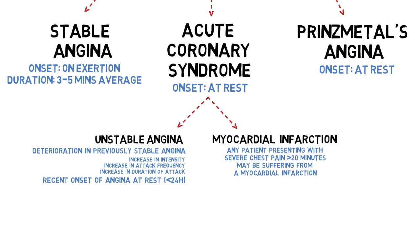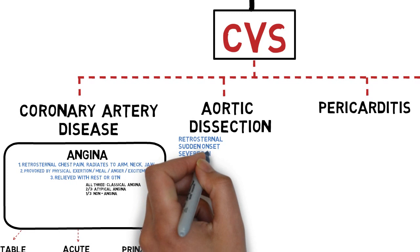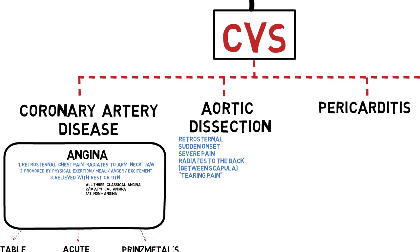In aortic dissection, the pain is also retrosternal because that is where our aorta is located. It is sudden in onset and severe. It may radiate to the back in between the scapulae, and it is tearing in nature. Whereas in angina we have gripping, constricting, or crushing pain.